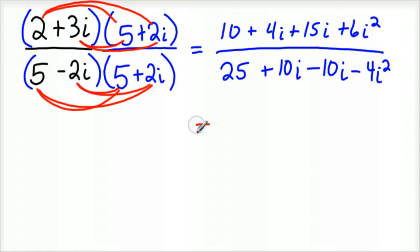So now it's a matter of simplifying the top and simplifying the bottom. Well, on the bottom, let's do it first. So 10i minus 10i is 0. That's gone. And 25 minus 4i squared. Well, remember, i squared is negative 1. So on the bottom, we really have 25 plus 4. On the top, similarly, i squared is negative 1. So that's a minus 6. And you've got 10.